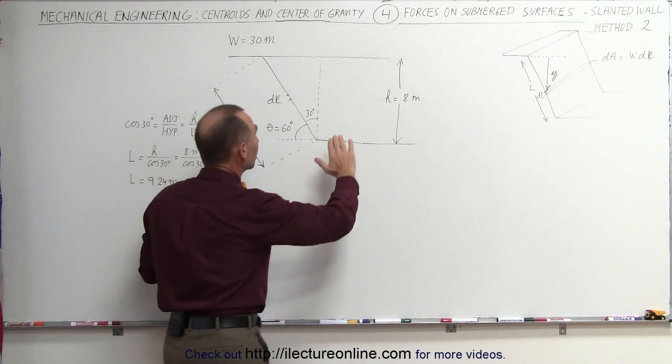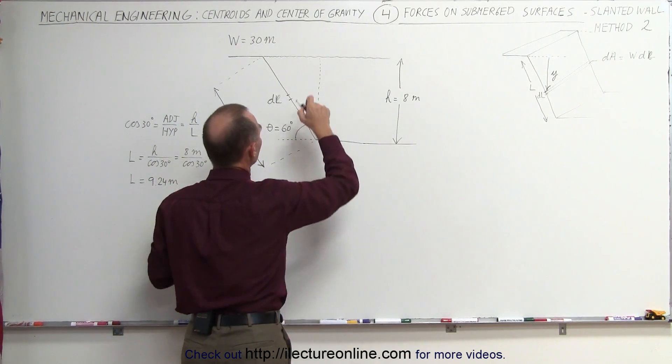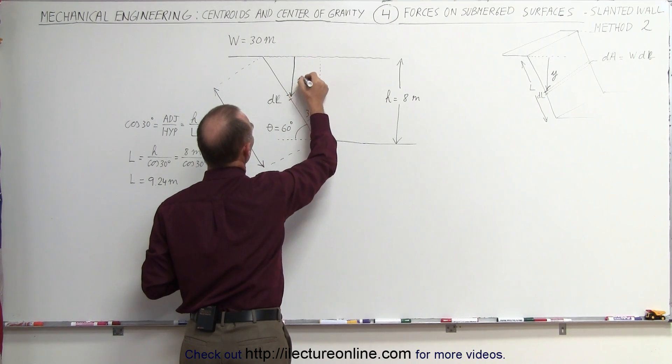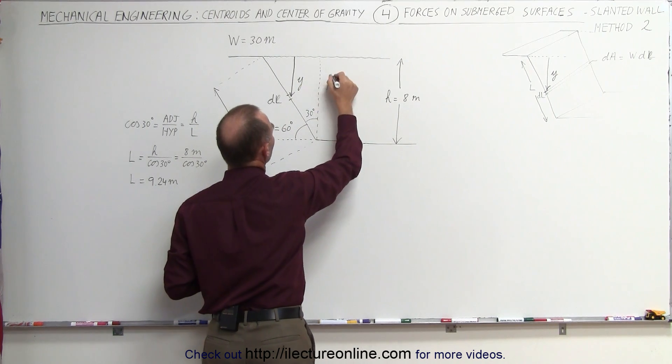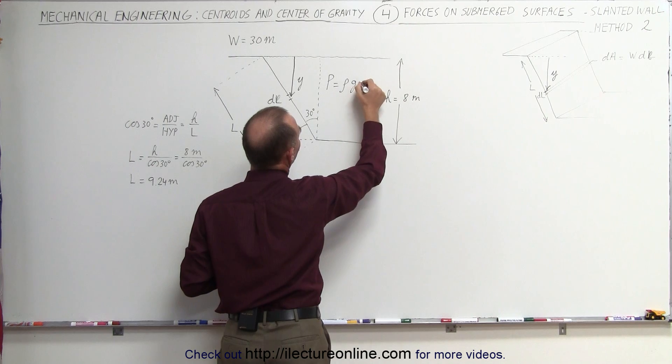Using Pascal's principle, we know that the pressure will be acting in all directions at any particular depth. So if we go down at a depth of y below the surface, we can say that at this depth, the pressure is equal to rho times g times h, or y. In this case, let's just use y.